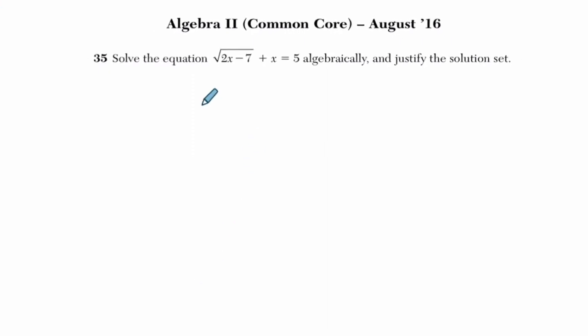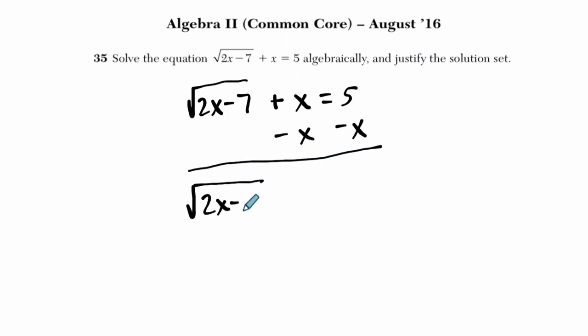Alright, so here we have, I'm just going to rewrite the whole thing, I'm going to get the square root of 2x minus 7 plus x equals 5, subtract x on both sides, and I get the square root of 2x minus 7 equals 5 minus x. Now, it's easier to square both sides. If you square this, you'd have to do distribution of two terms, but here, if we square this side, that will just cancel out the square root.